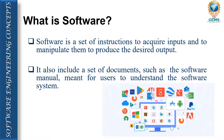First, we have a question: what is software? It seems the question is very simple and we all know the answer. Software is a set of instructions which acquires inputs and manipulates them to produce the desired output. In other words, software includes a set of documents such as a software manual meant for users to understand the software system.